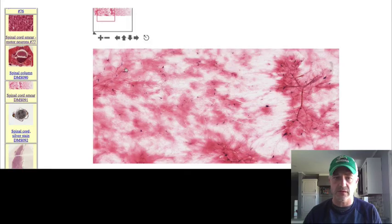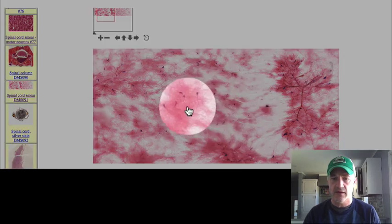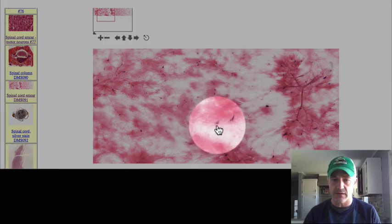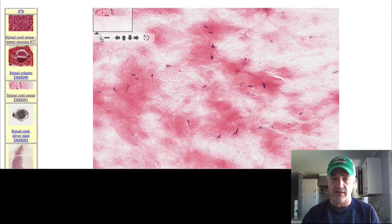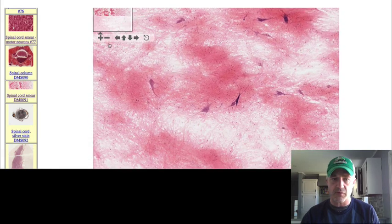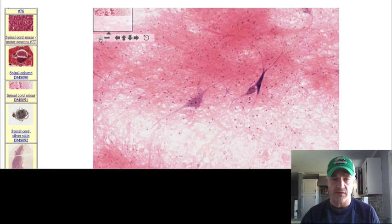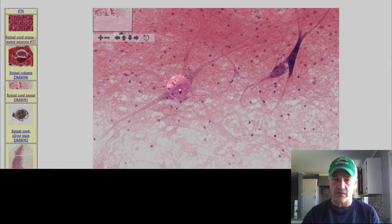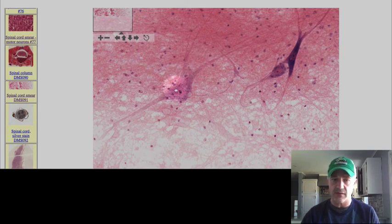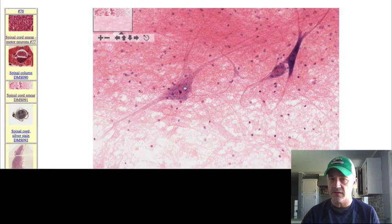Next time we'll cover glial cells and then the main parts of the central nervous system. This slide here is actually a spinal cord smear of neurons. Zooming in, you can identify these structures as neurons — looking for the cell body, the processes extending off of it, the nucleus, and the granular Nissl substance in the cytoplasm. Being able to identify neurons and their processes on a slide is the key takeaway for this material.